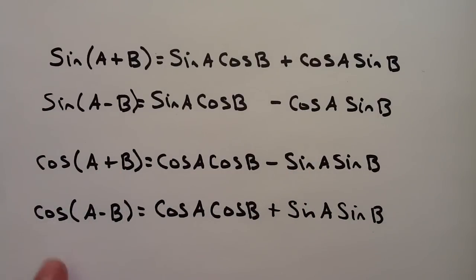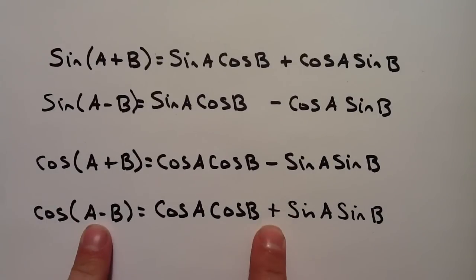Again, cosine doesn't get a lot going for him. So you've got cosine a minus b. So cosine's hanging out with himself. Sine's hanging out with himself. Since he's a negative person, the negative becomes a positive.